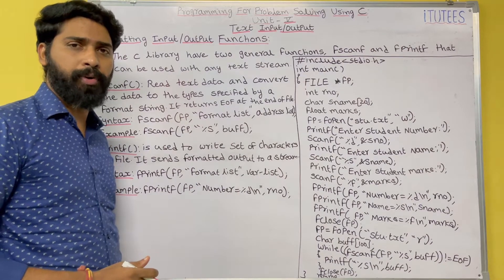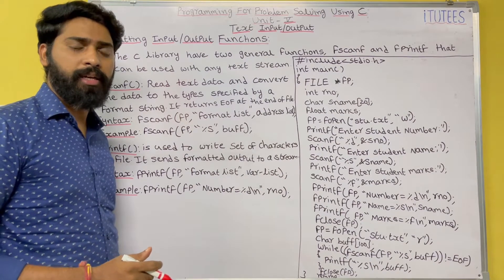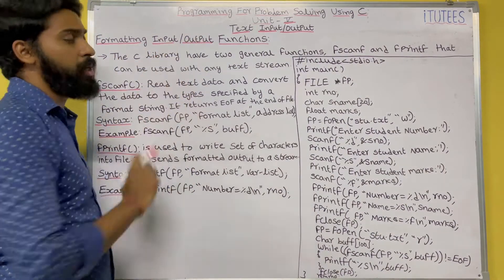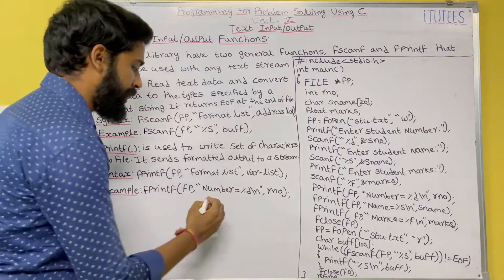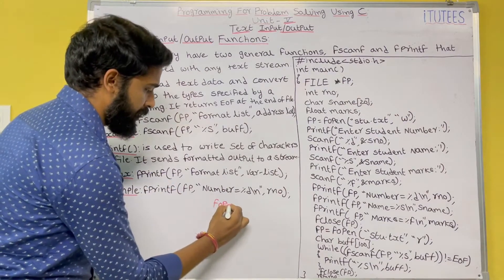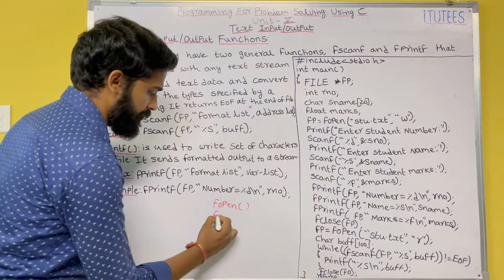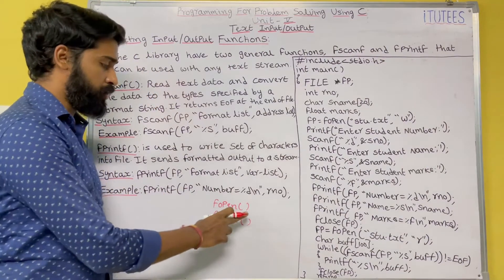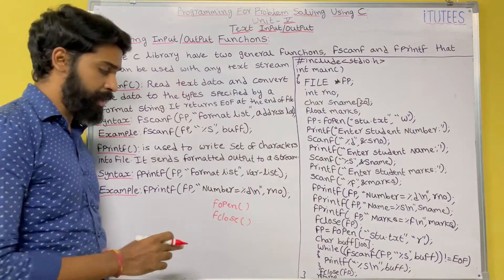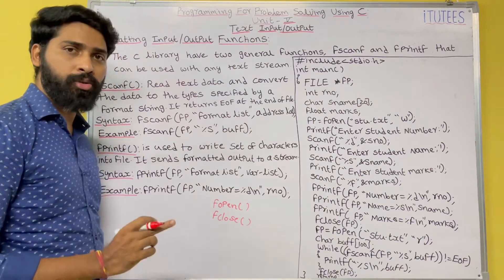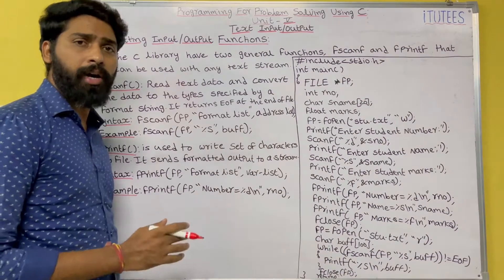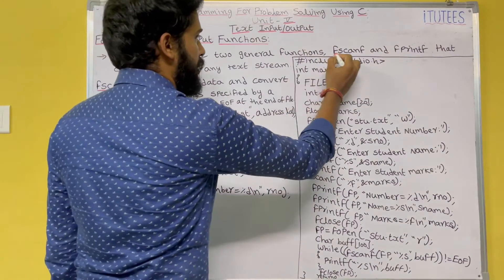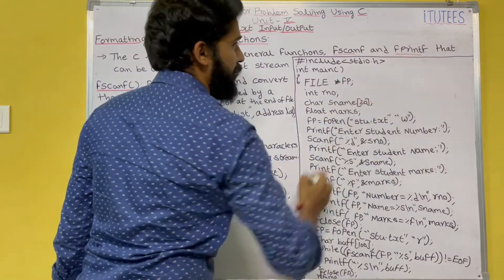Hello friends, welcome to C programming tutorials. In this class we are going to learn about formatting input and output functions. Last class we learned about the fopen function, which is used to open a file, and the fclose function, which is used to close a file. Now in this class we are going to learn another two functions: fscanf and fprintf.